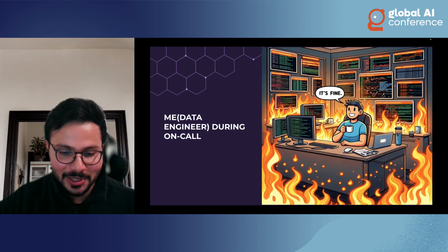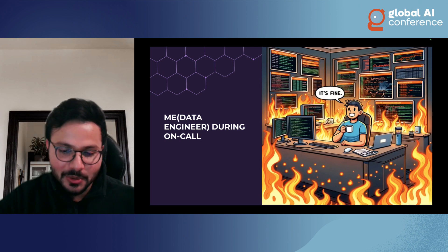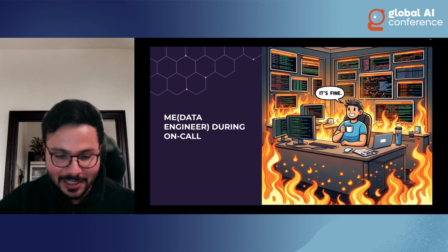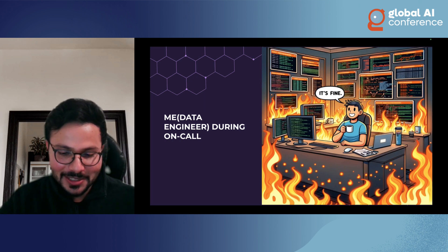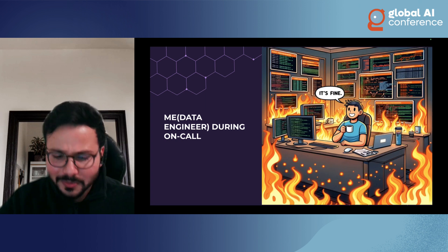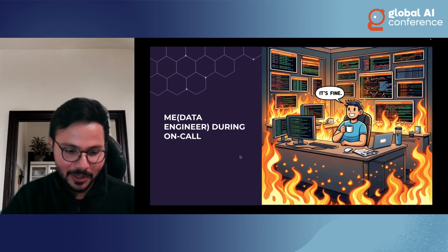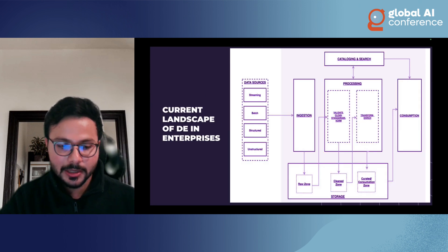On the screen you can see what a typical data engineer on-call looks like — they are basically on fire, because systems are breaking, data pipelines are breaking, and data quality issues keep happening. You can see there's fire all around, but you still have to keep your calm and get to work in order to keep things running. That's kind of like how a typical engineering on-call feels.